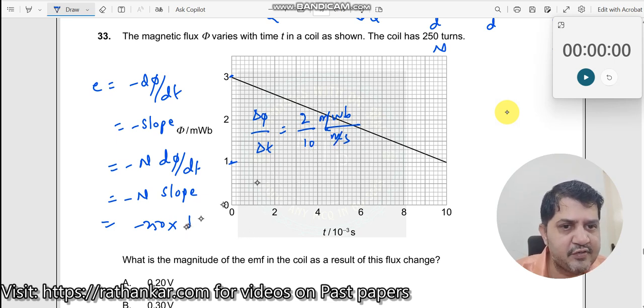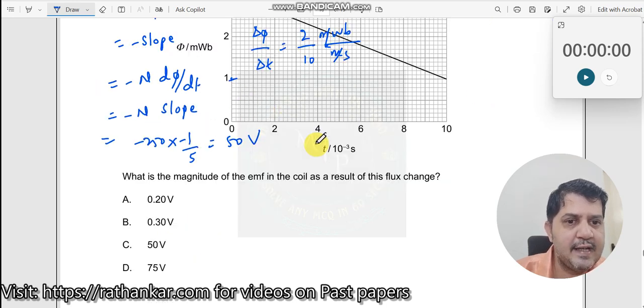So I will write this negative slope. This is minus 1 by 5 which should be equal to 50. 50 what is it? EMF is volt. So therefore, the answer should be 50 volt. Answer is C.